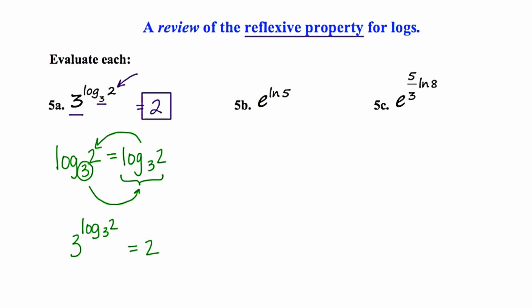For 5b, e to the ln five — the first thing I'm going to do is rewrite the problem showing the implied base. When working with natural log, there's an implied base of e. In doing this, we now have a match between the base of the exponential and the base of our log function. So the answer is just going to be the argument, which in this case is five.